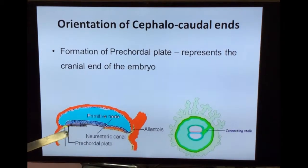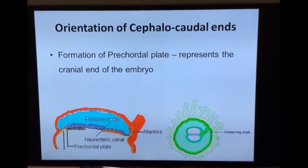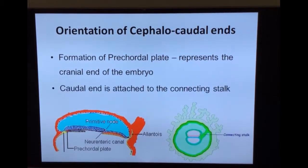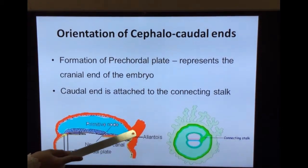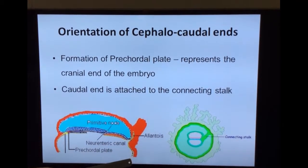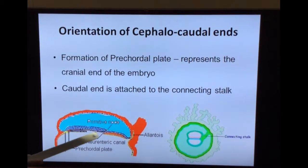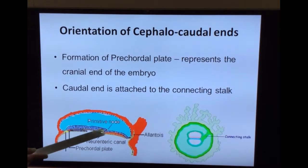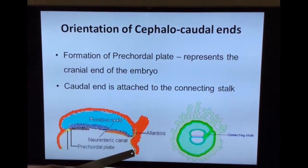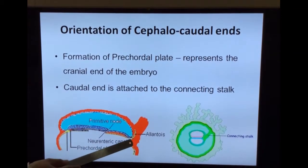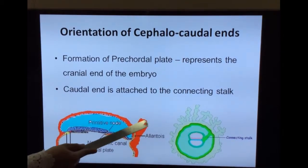This represents the cranial end of the disc, and the opposite side will be the caudal end of the disc. As you can see here, this is the bilaminar disc. Above that is the amniotic cavity and below is the yolk sac. The posterior wall of the yolk sac will form a small diverticulum which enters the connecting stalk.